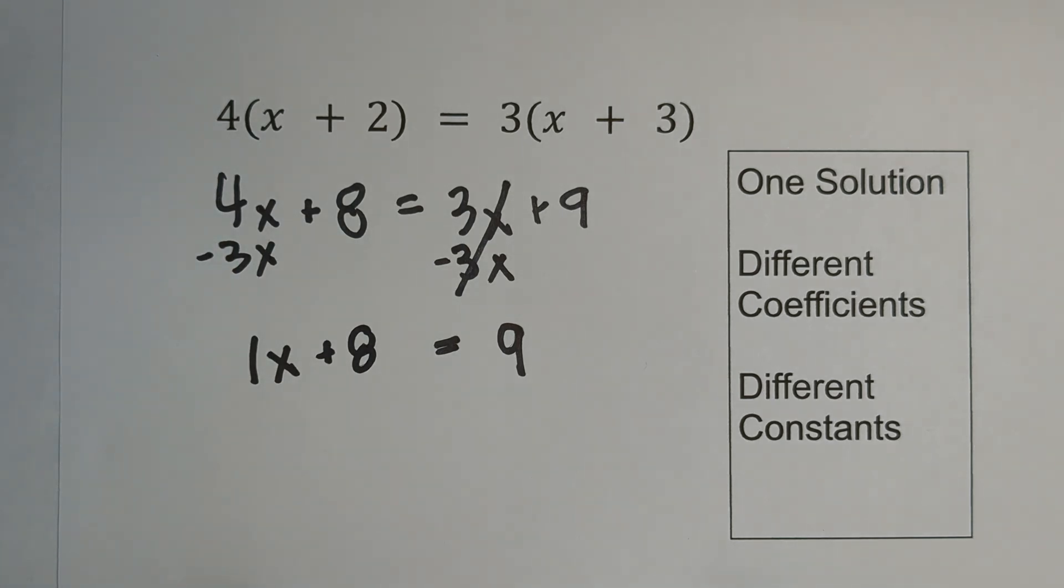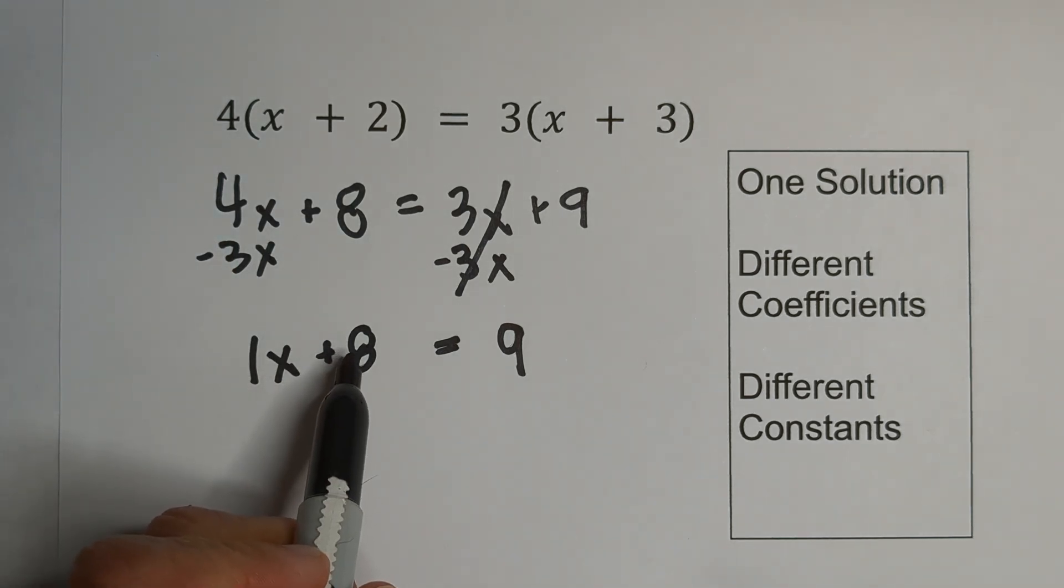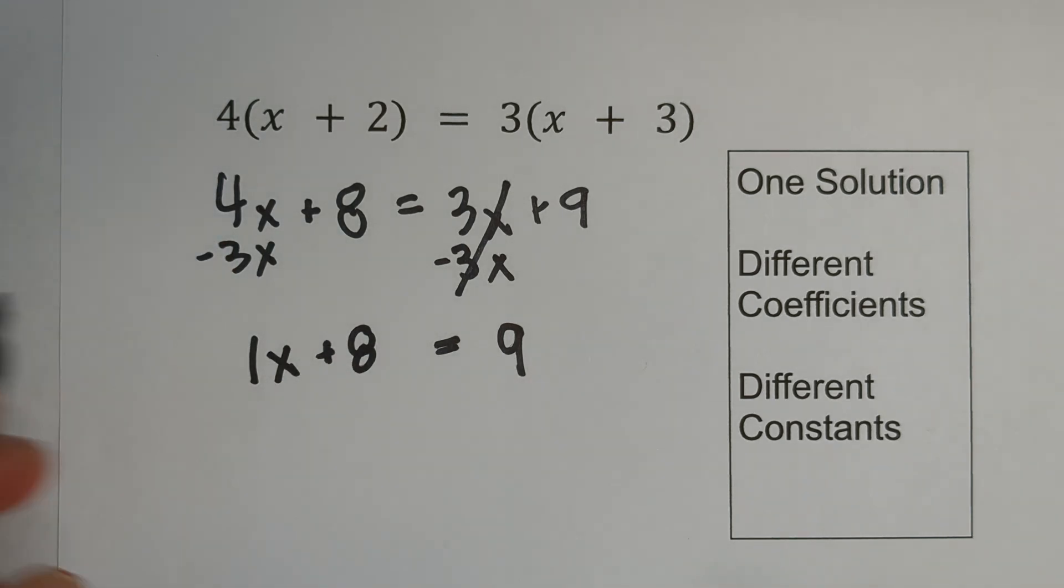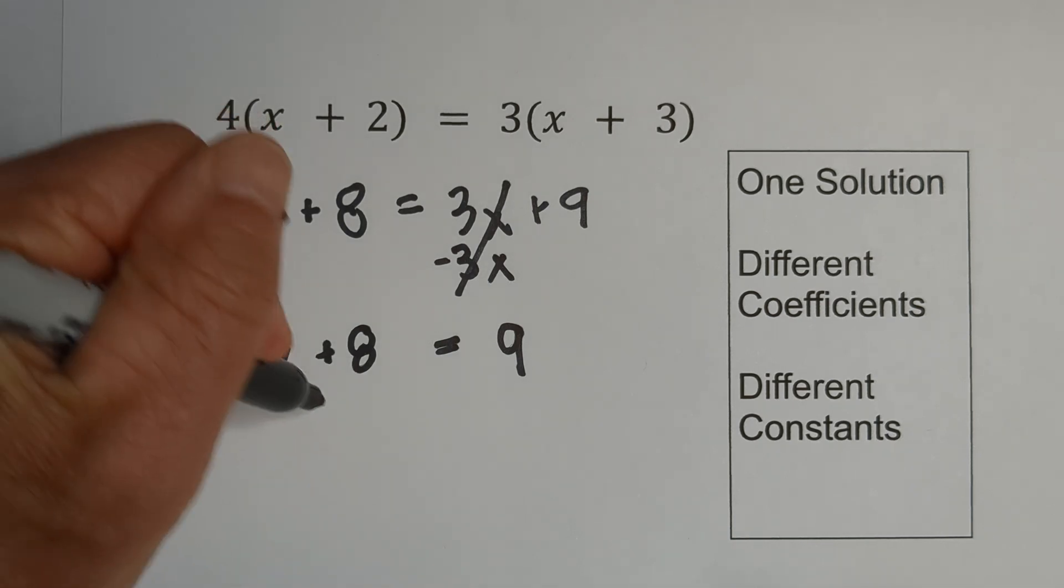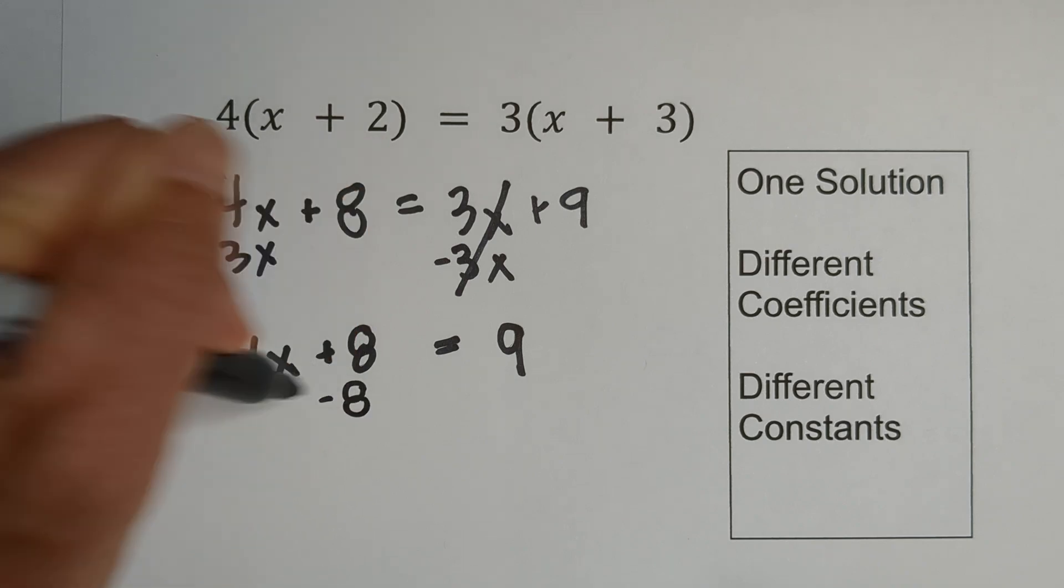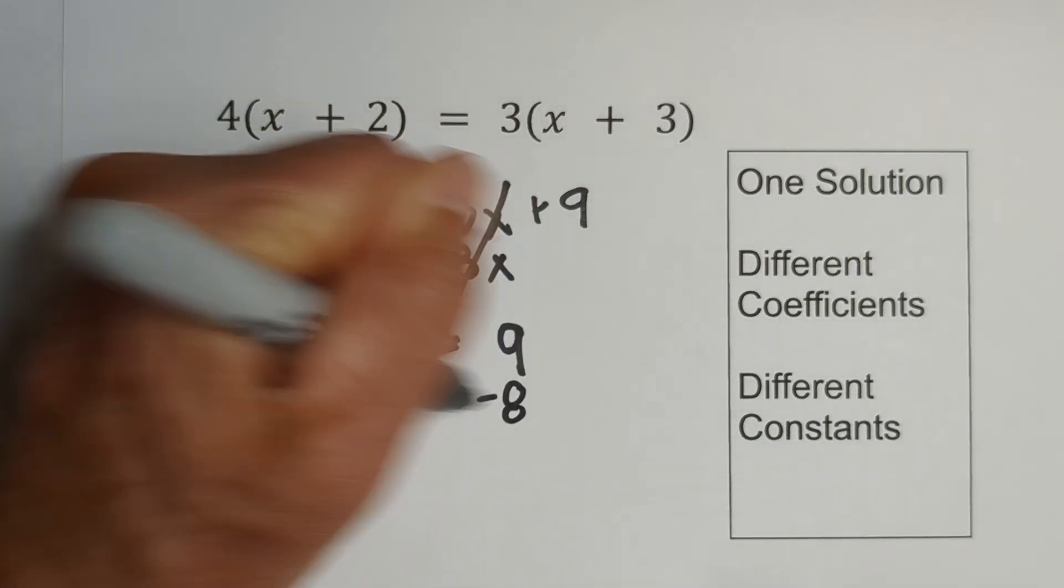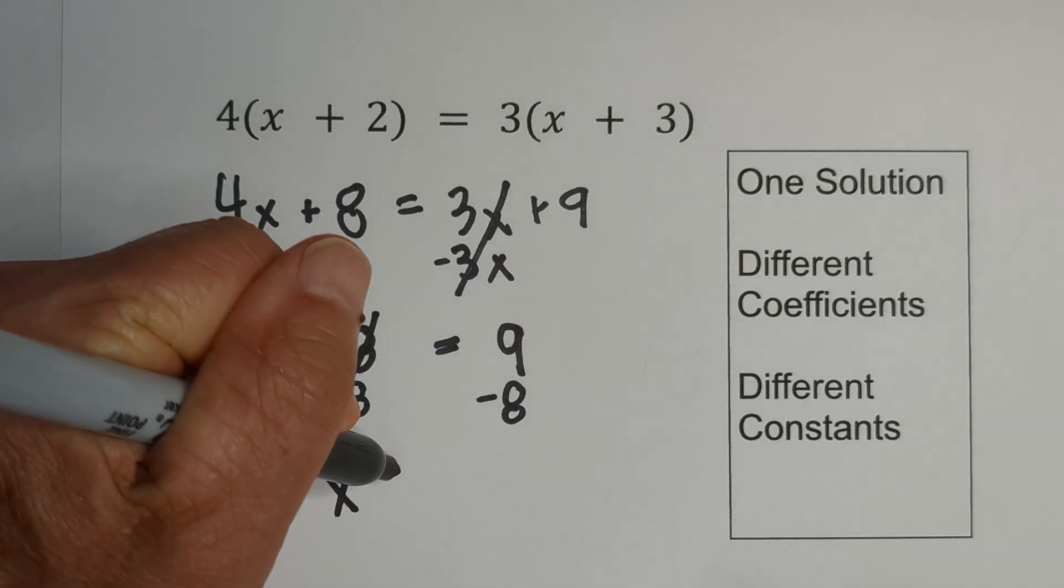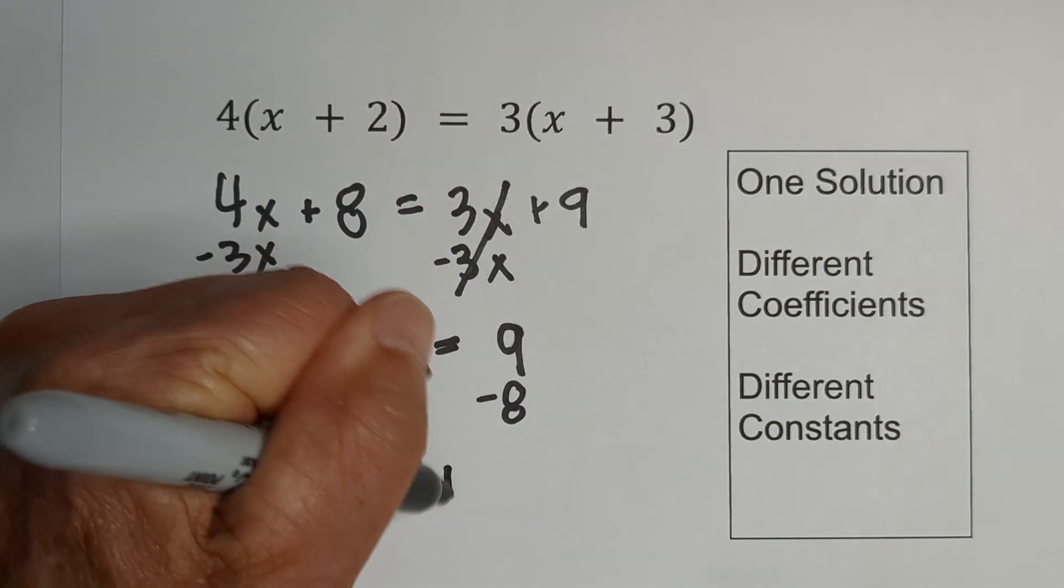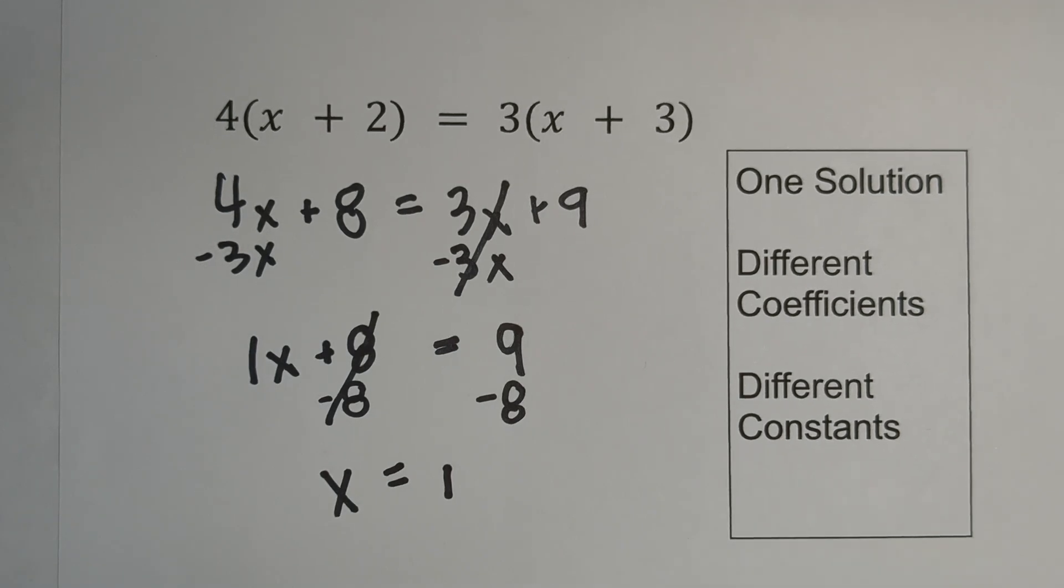Now we're going to move constants to the right. In order to move the eight to the right, we're going to do an inverse operation, subtract eight, a negative eight from both sides, these cancel, bring down the x, and x is equal to one. Again, one solution.